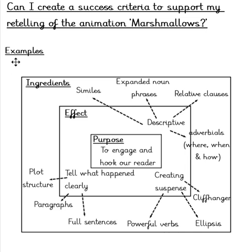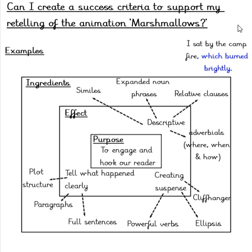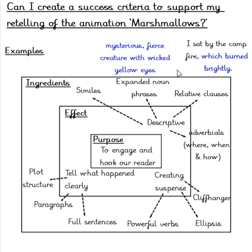Finally, we need to list some examples of how we plan to use these ingredients in our story. For relative clauses: 'I sat by the campfire, which burned brightly' — where 'which burned brightly' is the relative clause. For expanded noun phrases: 'Mysterious, fierce creature with wicked yellow eyes.' Here I have used the adjectives 'mysterious' and 'fierce' to describe the creature, and added extra information with 'wicked yellow eyes.'